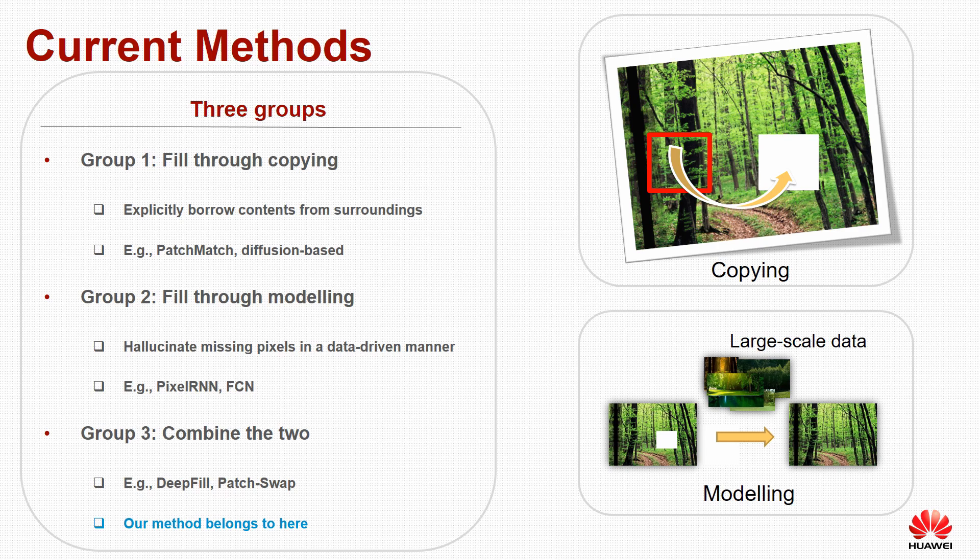The current methods for image inpainting can be categorized into three groups. The first group is referred to as fill-through-copy. These methods fill the hole region by explicitly borrowing contents from the surroundings. Examples include patch-match and diffusion-based methods.